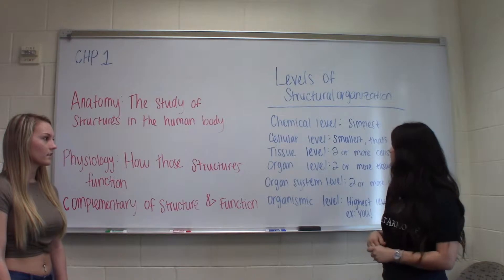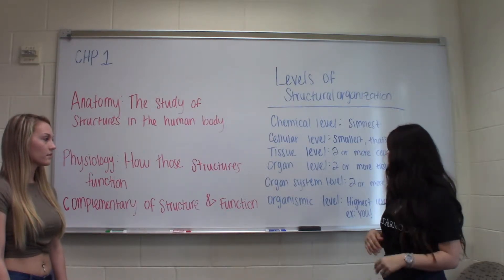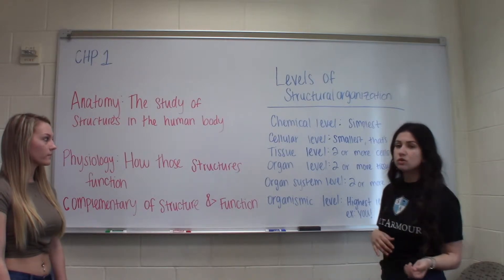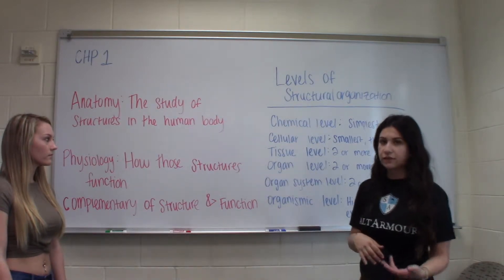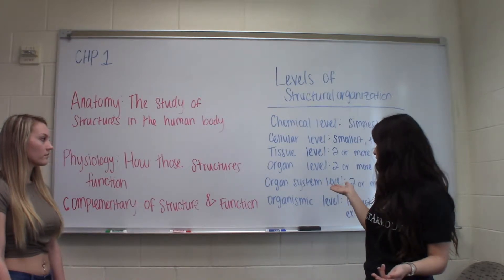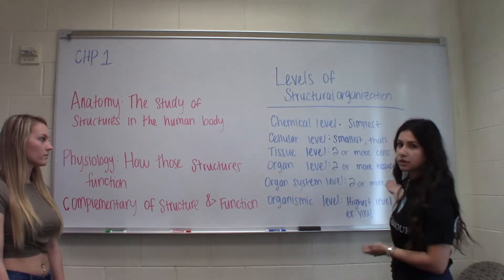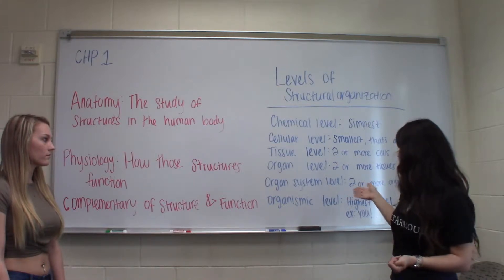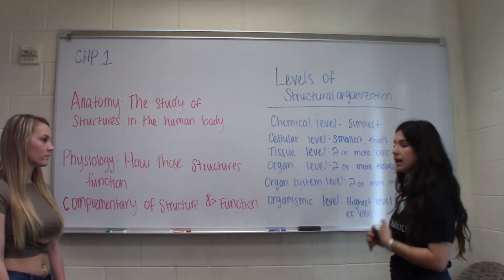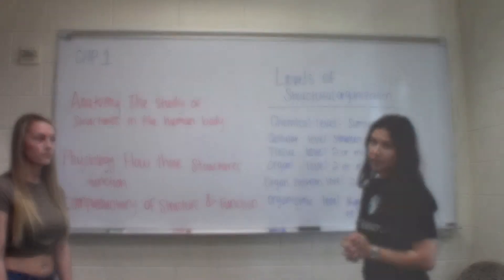The chemical level is the simplest. The cellular level is the smallest thing that can be alive. The tissue level is two or more cells working together for a similar function. The organ level is two or more tissues working together, the organ system level is two or more organs working together, and the organismic level is the highest level — the example would be you, the overall product.